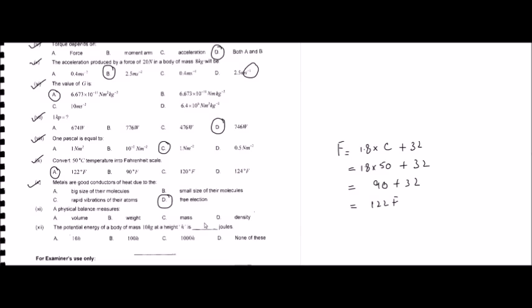Question number eleven: a physical balance measures — options are volume, weight, mass, and density. The physical balance is used to measure the mass of an object, so option C is the correct answer.